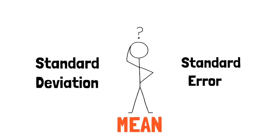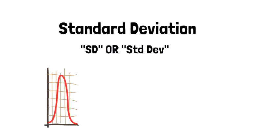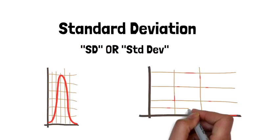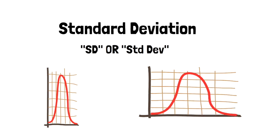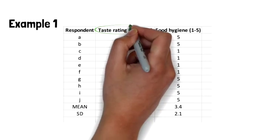Standard deviation and standard error are commonly used terms with respect to mean, but are two very different concepts. Standard deviation, abbreviated as SD, shows how far individual data points deviate from the mean. Standard deviation tells us how spread out the data points are—are they concentrated around the mean or scattered far and wide?